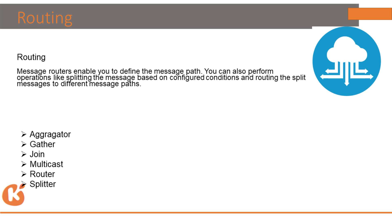Router is a CPI palette. You define a router condition — if it is satisfied the message goes to a specific path; if not, it goes to the default path. The message router enables you to define the message path, perform operations like splitting based on a compare condition, and route messages to different paths.